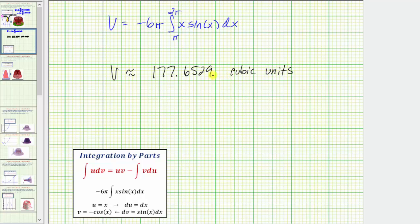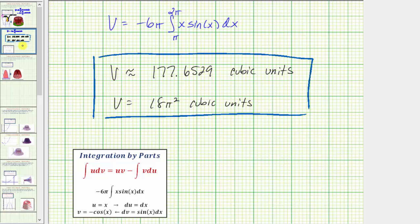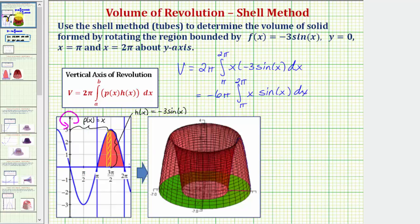If you do try to find the exact value using integration by parts, the exact value is 18 pi squared cubic units. Going back to the first slide, we now know if we rotate this region about the y-axis, it would give us this solid. And this solid has a volume of approximately 177.6529 cubic units. I hope you found this helpful.